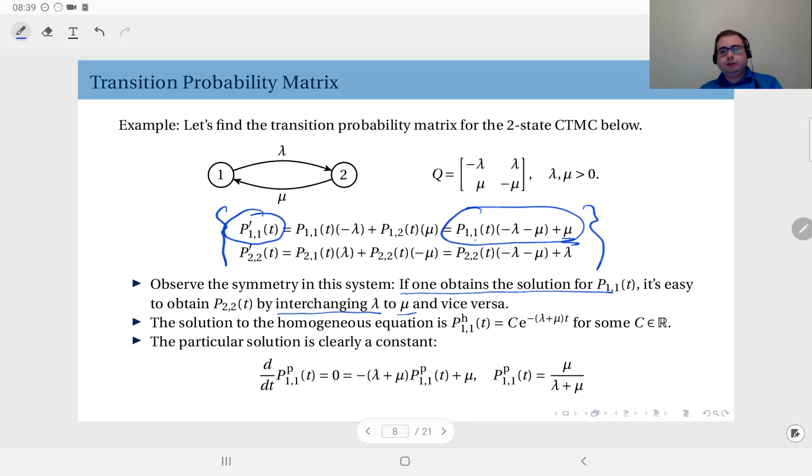So what I need to do is I need to solve the homogeneous part of this equation and also find a particular solution. To solve the homogeneous equation, of course, you need to get rid of this term. So the derivative of P11(t) equals P11(t) times minus lambda minus mu.